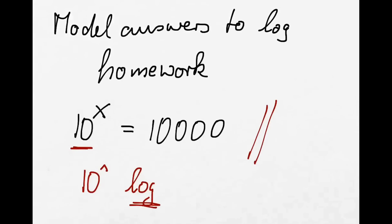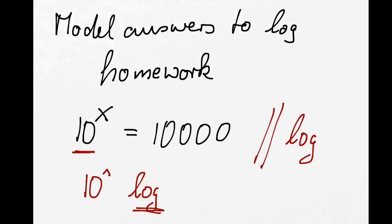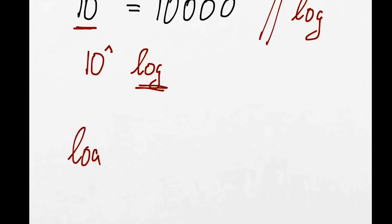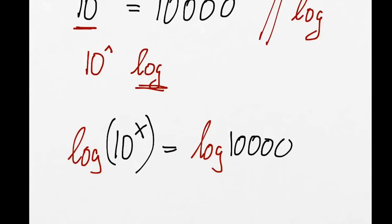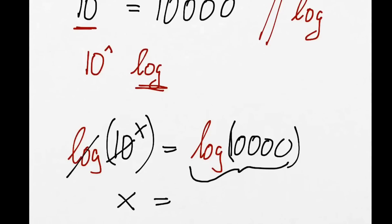So what we do is we take both sides log to the base of 10, and what we get is log(10^x) equals log(10,000). We know that log and 10 cancel out, so all we have left on the left-hand side is x equals log(10,000). If we put that in a calculator, we get 4. So log(10,000) equals 4.